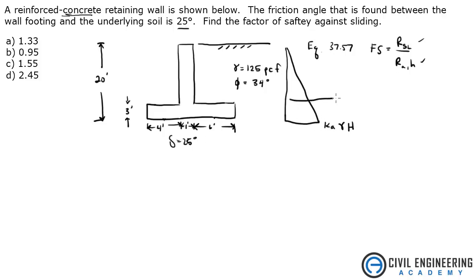Now to find what it is the resultant acting a third up, you take basically the area of a triangle which is one half the base which is Ka gamma H times your height which is another H. So we just need to find Ka though, and Ka comes from equation 37.6, which says that Ka is equal to tangent squared of 45 minus phi over 2.